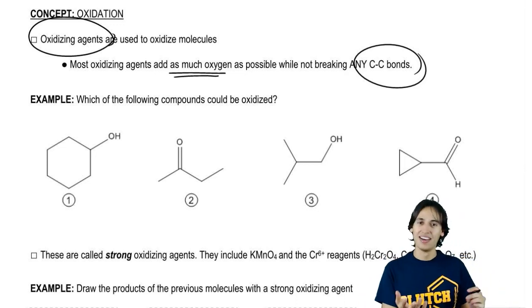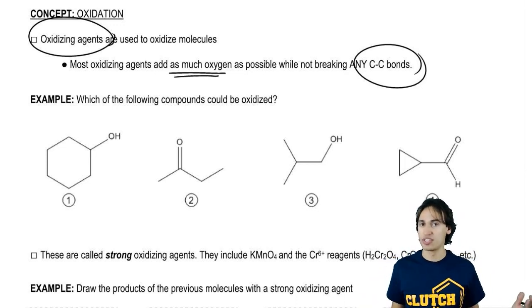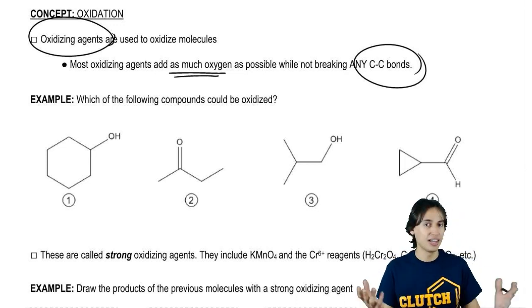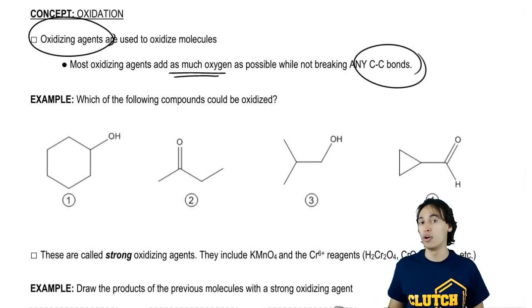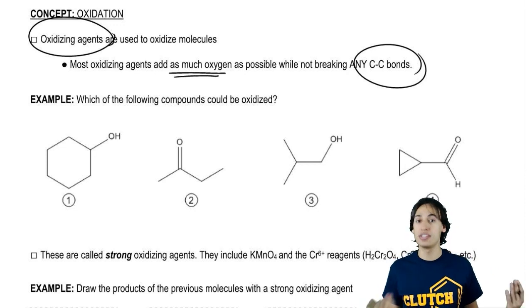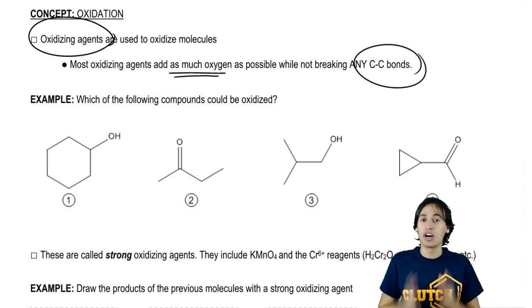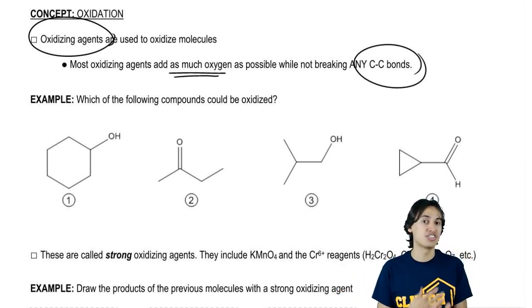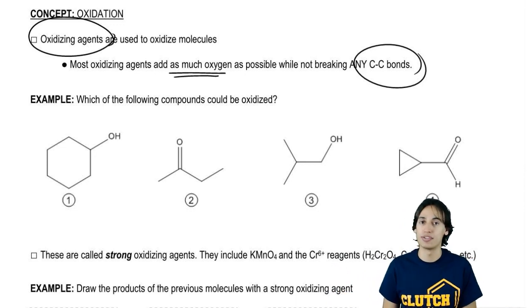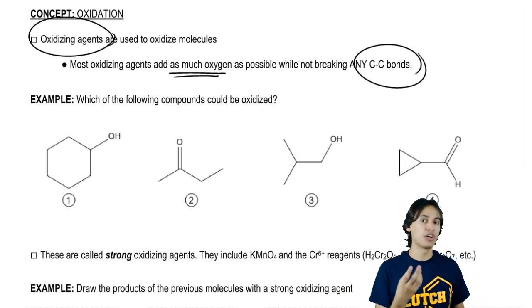Now this is a little bit of a lie. There are some oxidizing reagents that can break carbon-carbon bonds. Some examples that you might already know would be, for example, ozonolysis. That would be an example of an oxidation that can. But that's not what we're going to talk about in this topic. That's its own separate topic. For right now, I'm trying to deal with these oxidizing agents that don't break carbon-carbon bonds.